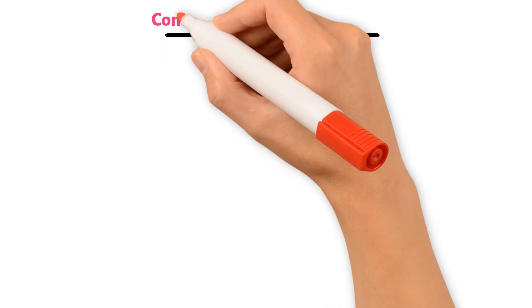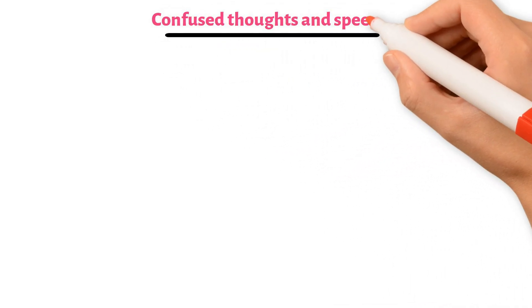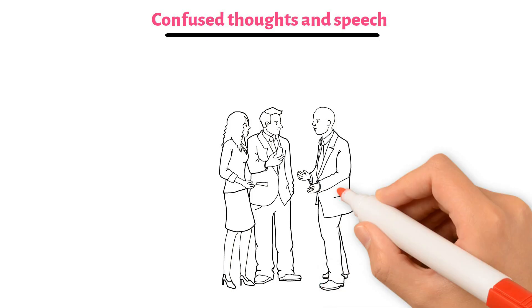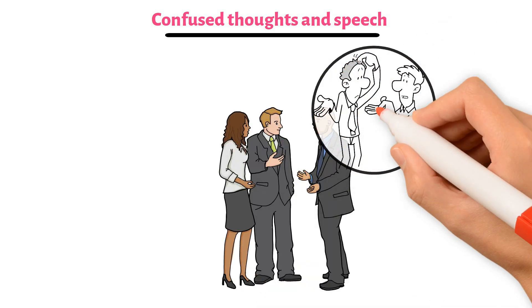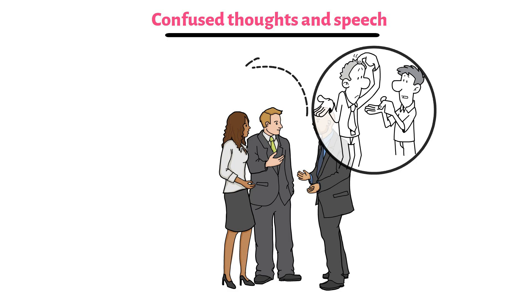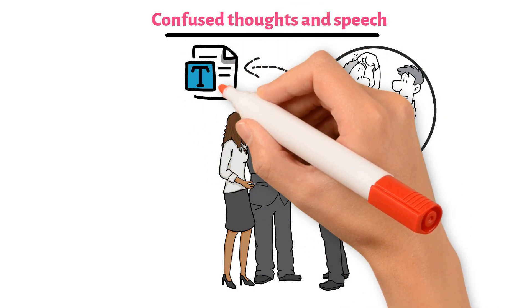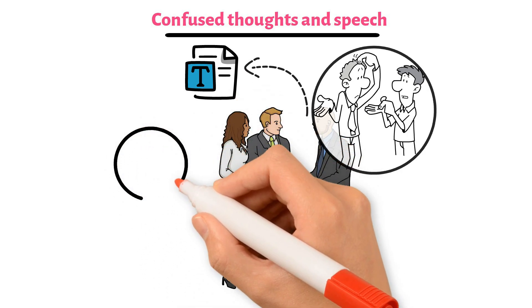Next, confused thoughts and speech. People with schizophrenia might jump from one topic to another without any logical connection, making it hard for others to follow what they're saying. They may also make up words or use existing words in a strange way, making their speech difficult to understand.